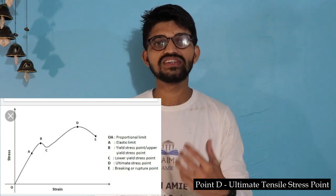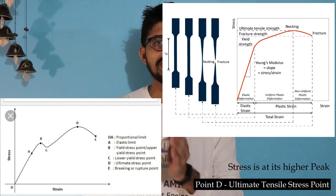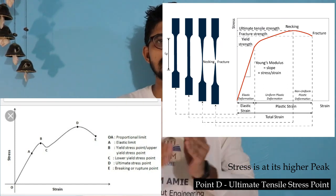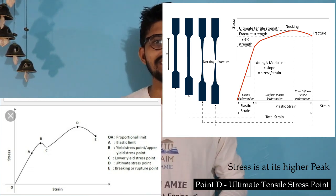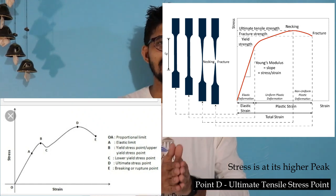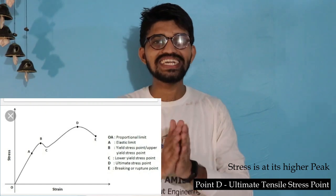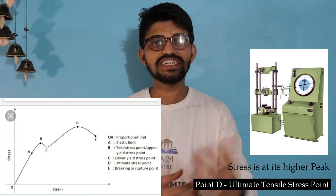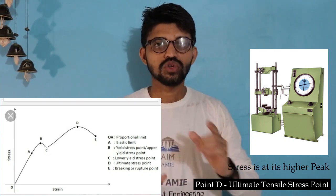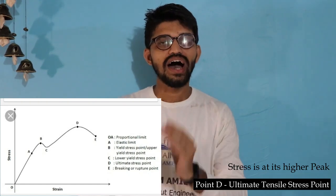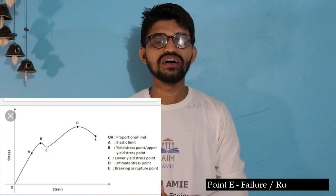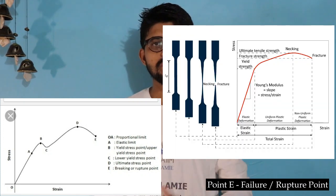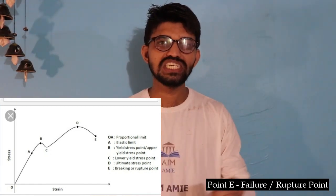Moving to point D: as the load and stress increase, the necking phenomenon grows. Point D is the highest stress point on the curve and is termed the ultimate tensile stress (UTS) — this is the maximum stress a particular specimen can carry, and it is the maximum reading you will get from the universal testing machine. After point D, at point E, the material fails — the breaking or rupture occurs. Point E is known as the rupture point or failure point.